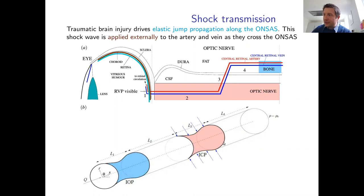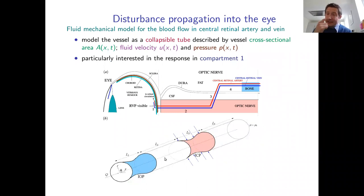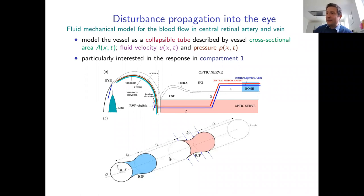The goal is to apply a pressure increase externally to compartment 3 — the vessel crossing the CSF space — and observe what happens to flow in compartment 1, inside the eye, which is what a clinician can actually see. A collapsible tube model is set up: three variables (cross-sectional area A, fluid velocity u, local pressure p), using conservation of mass, conservation of momentum, and a tube pressure law.